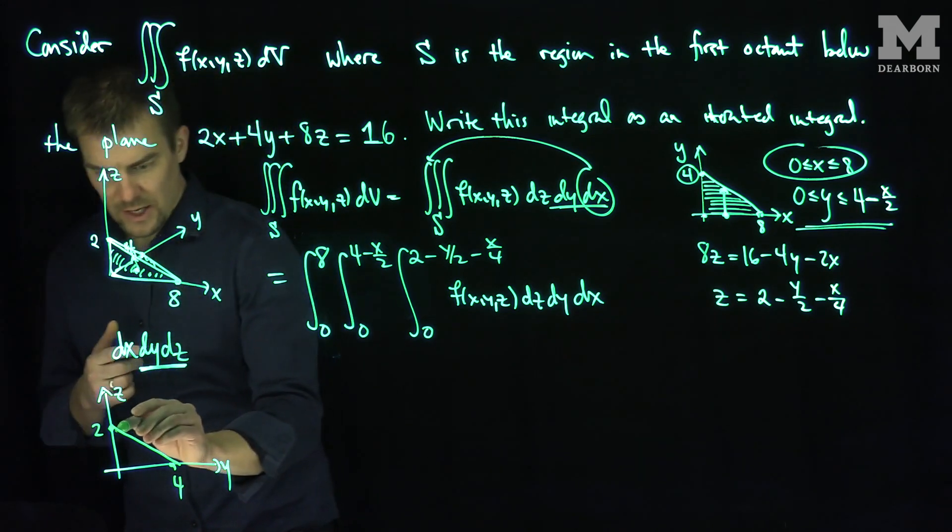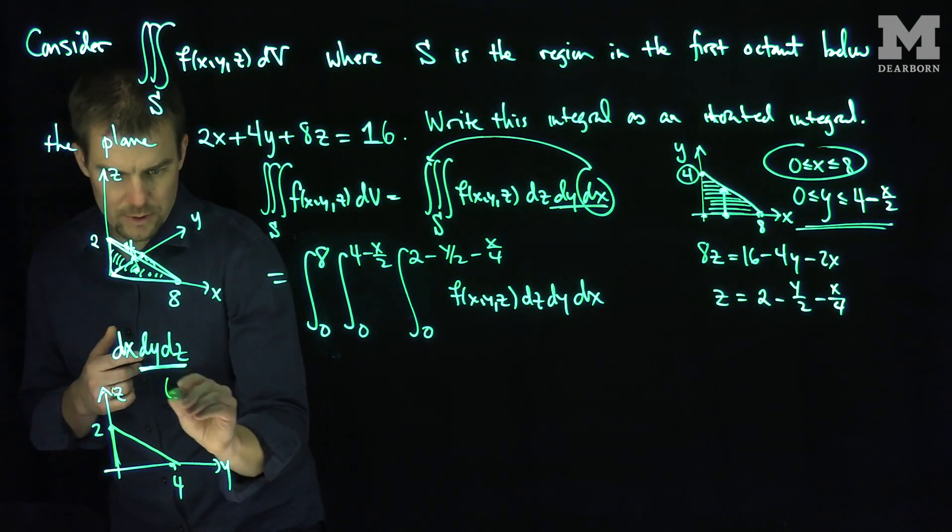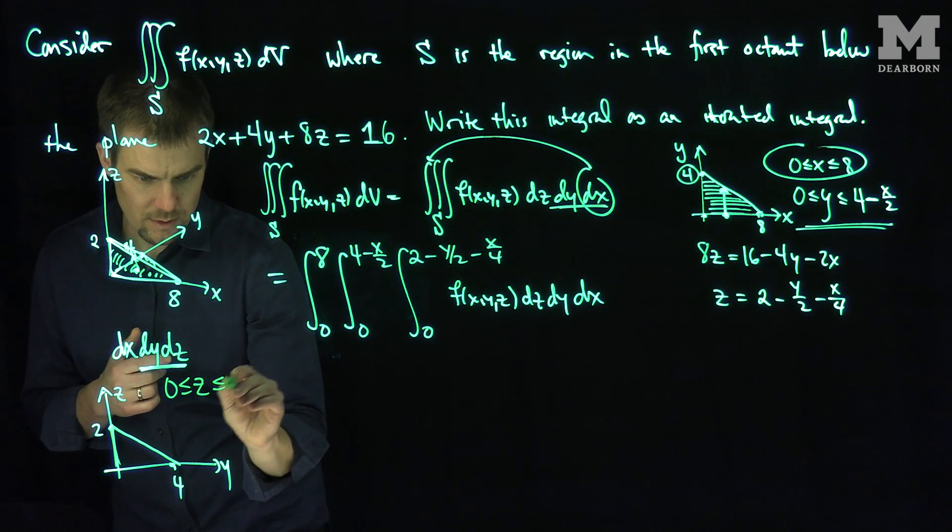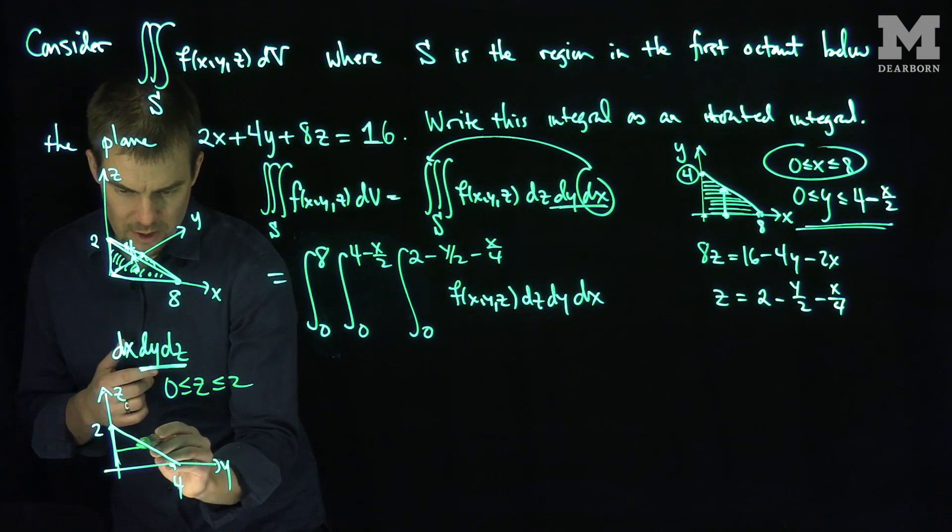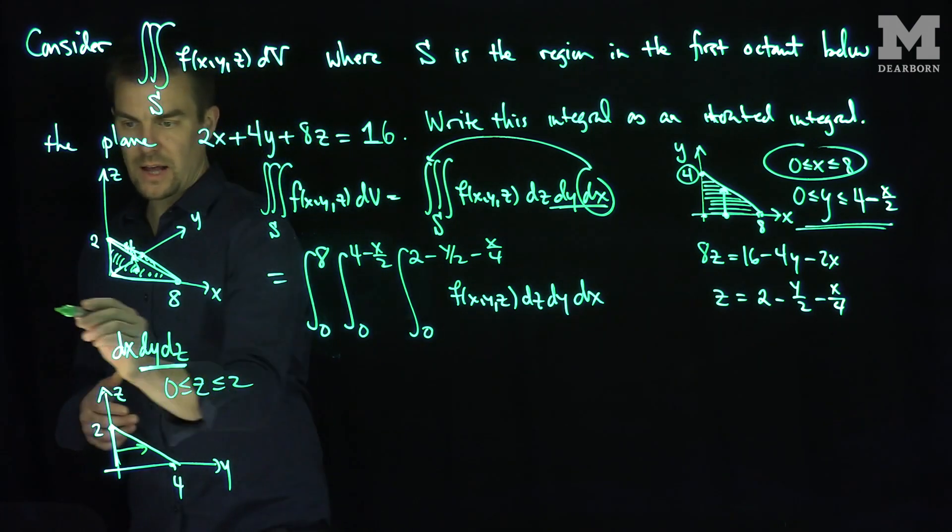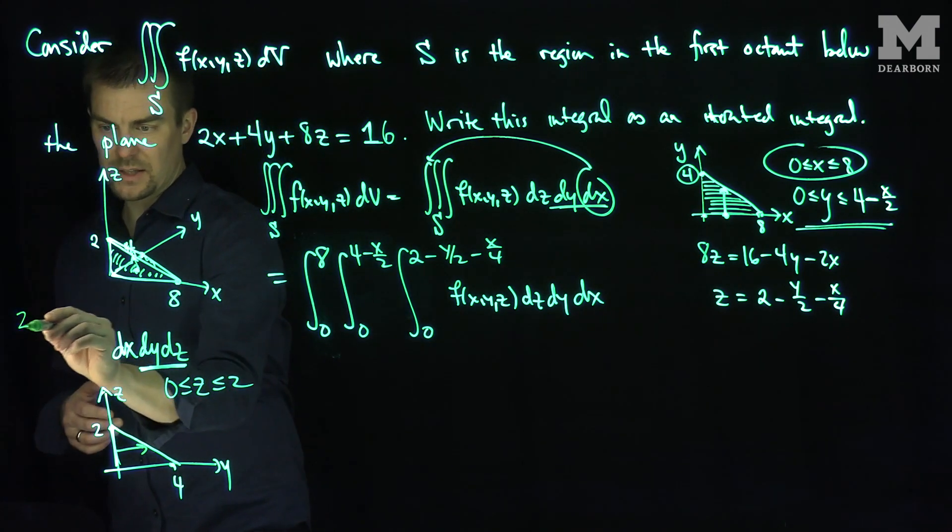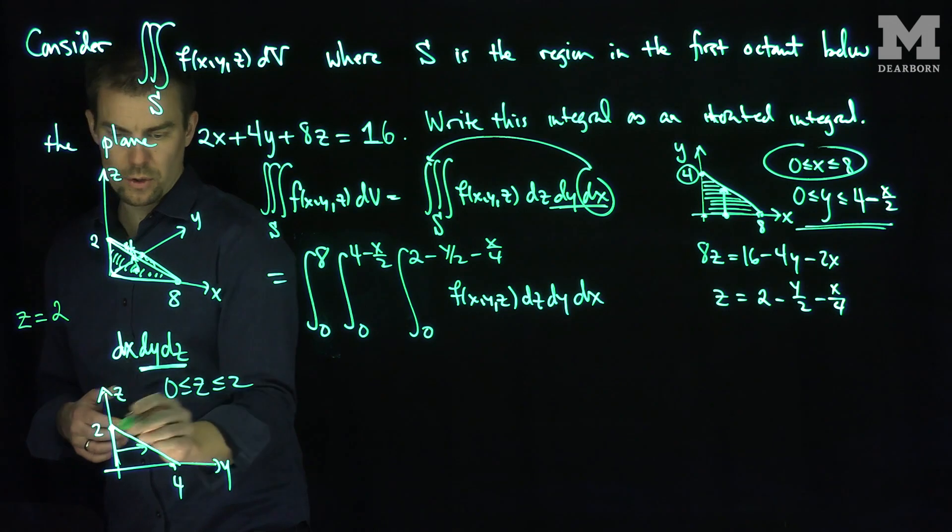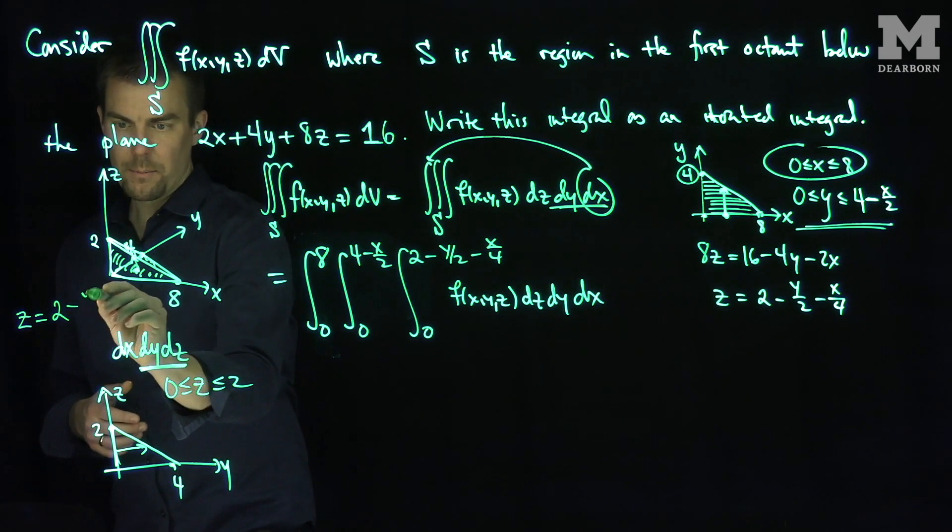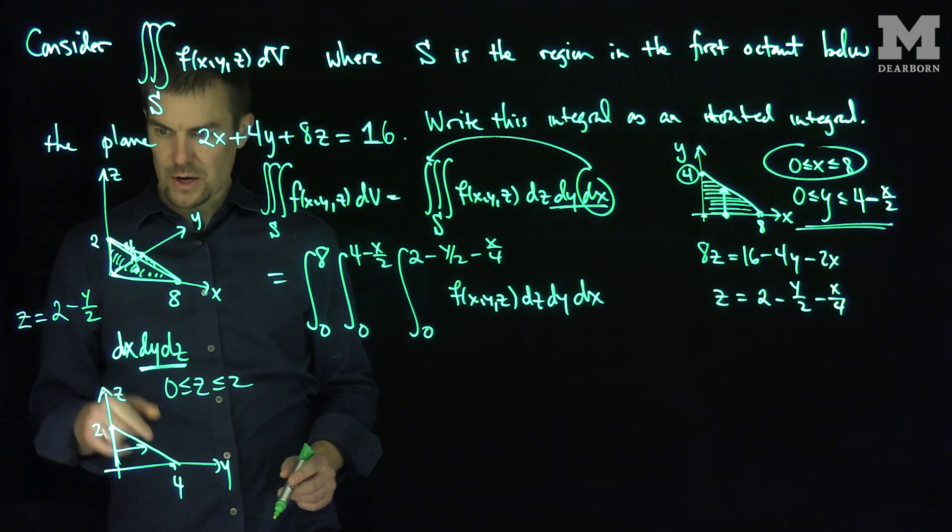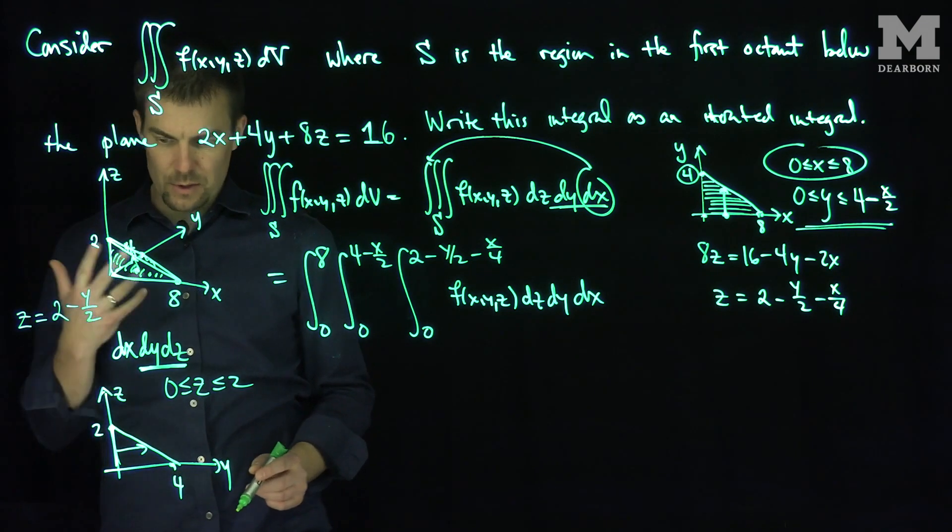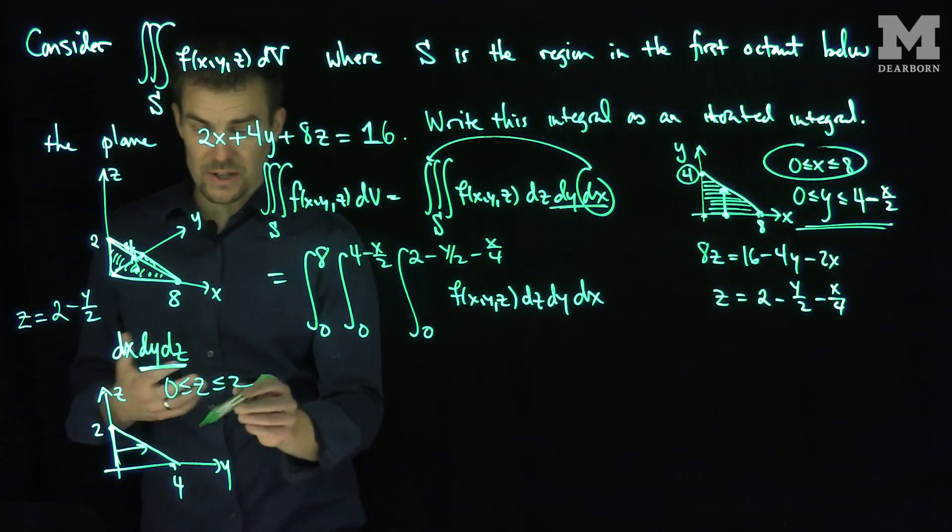So what's z going between? z goes between 0 and 2 in this region. And what does y go between? y goes between 0 over here and the equation of this line. Well, what's the equation of that line? The equation of that line is going to be what? It's going to be z is equal to 2. And the slope again is 1 half minus y over 2. Let's check. So when I plug in y equals 0, I get to z equals 2. When I plug in y equals 4, I get to z equals 0. That's the equation for what? That's the equation for z.